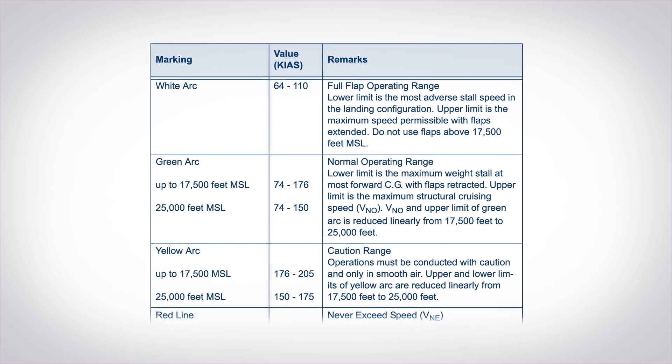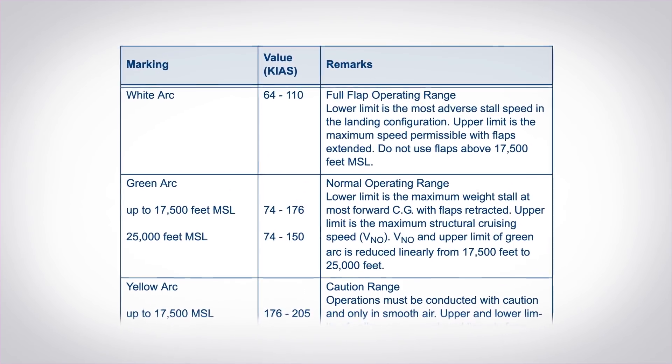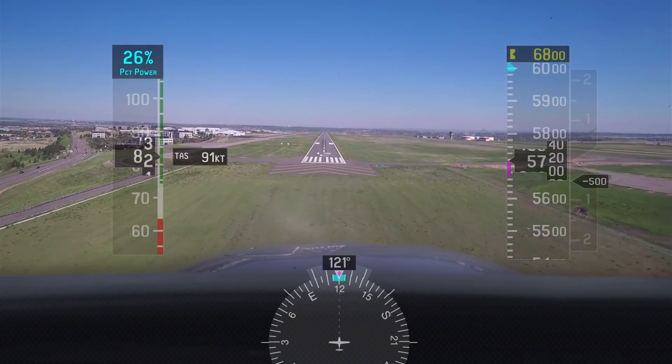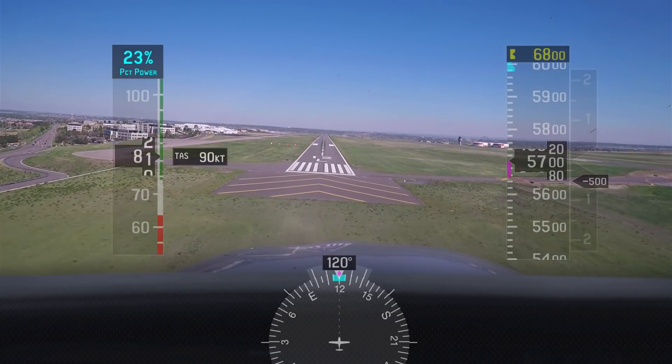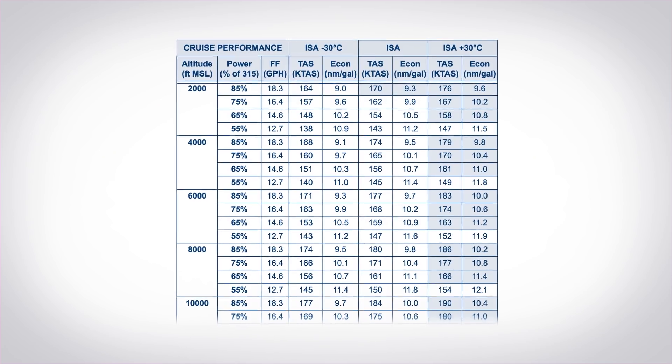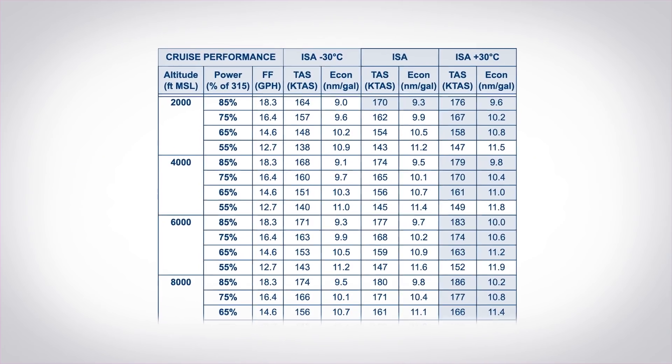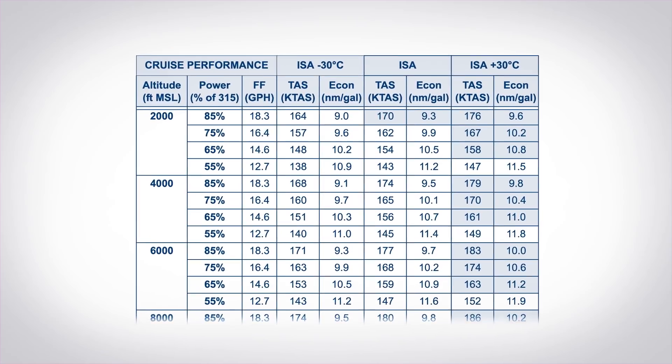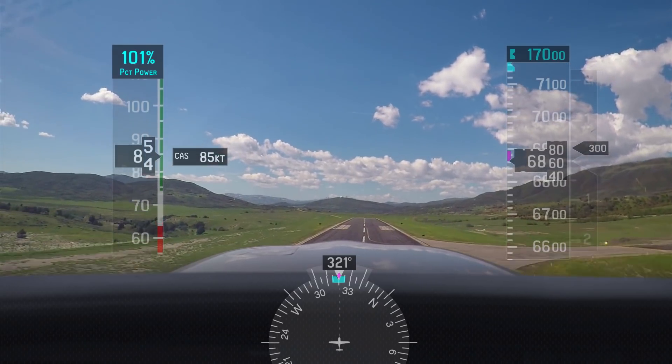The airspeed indicator is showing you accurate pressure, and that's why we use it for limitations — for stall speeds and takeoff and landing speeds — because those don't really care about how fast you're going; they just care about how much air is moving over your aircraft. But when we're planning, we want to know how fast we're going — that's how we get to ground speed, estimated time en route, and fuel burn. That's why planning starts with true airspeed, and that's why your performance charts use true airspeed.